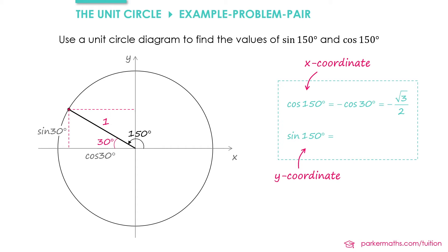The distance we've traveled in the y direction is sin 30. And since that is still in the positive direction, sin 150 is equal to sin of 30, which gives us 1/2. So the coordinates of the point on the circumference are minus √3/2, 1/2.